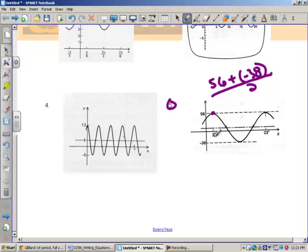All I'm doing is averaging here. And that is 18 divided by 2, which is 9. So my sinusoidal axis is 9.